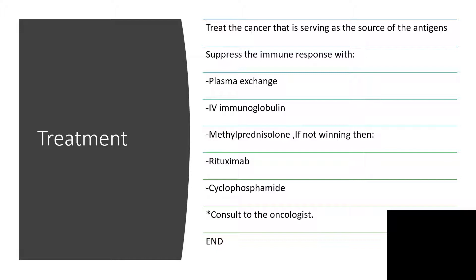Of course, it would be wise to consult the oncologist. Thanks for listening. Kindly subscribe so that you can have these presentations immediately when they are published. To summarize: paraneoplastic syndrome — suppress the immunological process going on, refer to the oncologist, look for the cancer, and treat appropriately with advice from the oncologist.